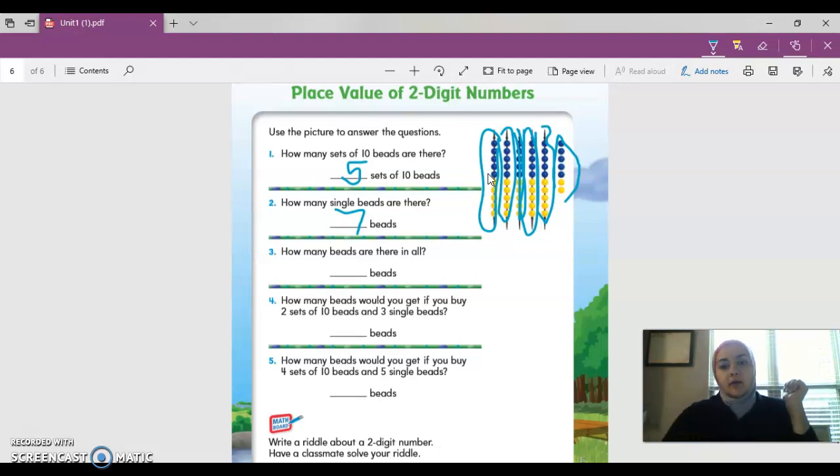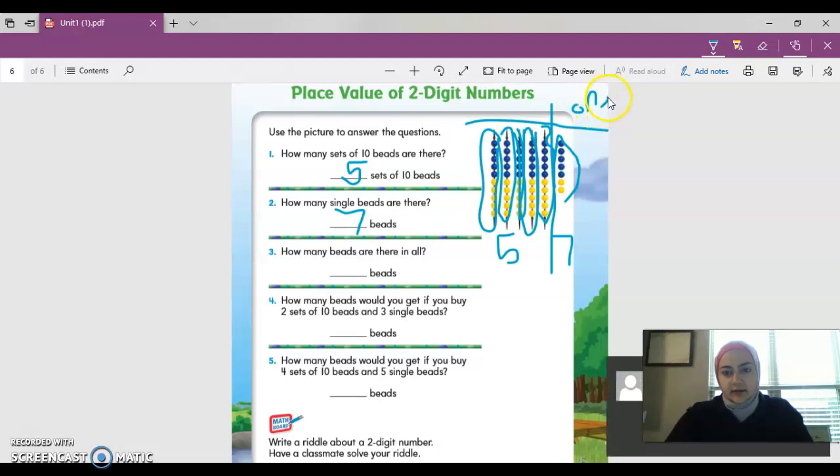You can also count it. These are all 10, so we can count by tens: 10, 20, 30, 40, 50. And then there's seven little ones here. So if this is 50 and this one is seven, because when you separate it like this, this is the ones place and this is the tens place. So it's 57.